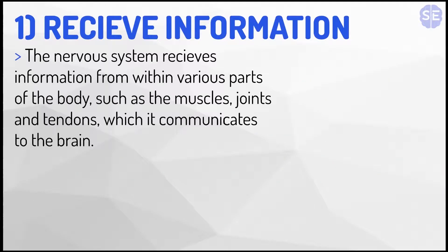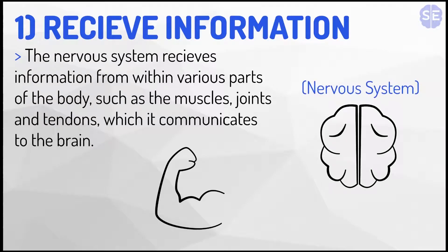Continuing with the first basic function, the nervous system also receives information from within various parts of the body such as the muscles, joints, and tendons, which it communicates to the brain. So it's not only external factors like the tree — it's also inside the body that communicates to the brain.